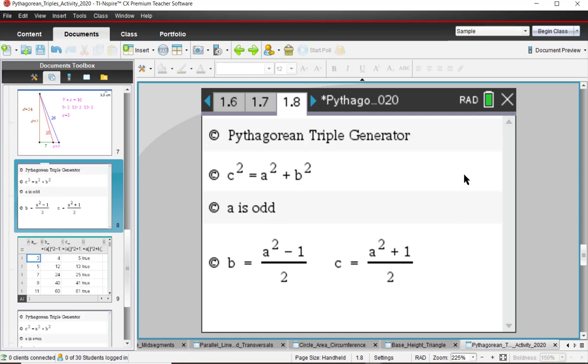So normally what I would do is have students do this by hand, pick an odd number, generate the three numbers, and have them verify that it truly is a Pythagorean triple. Press pause as needed.